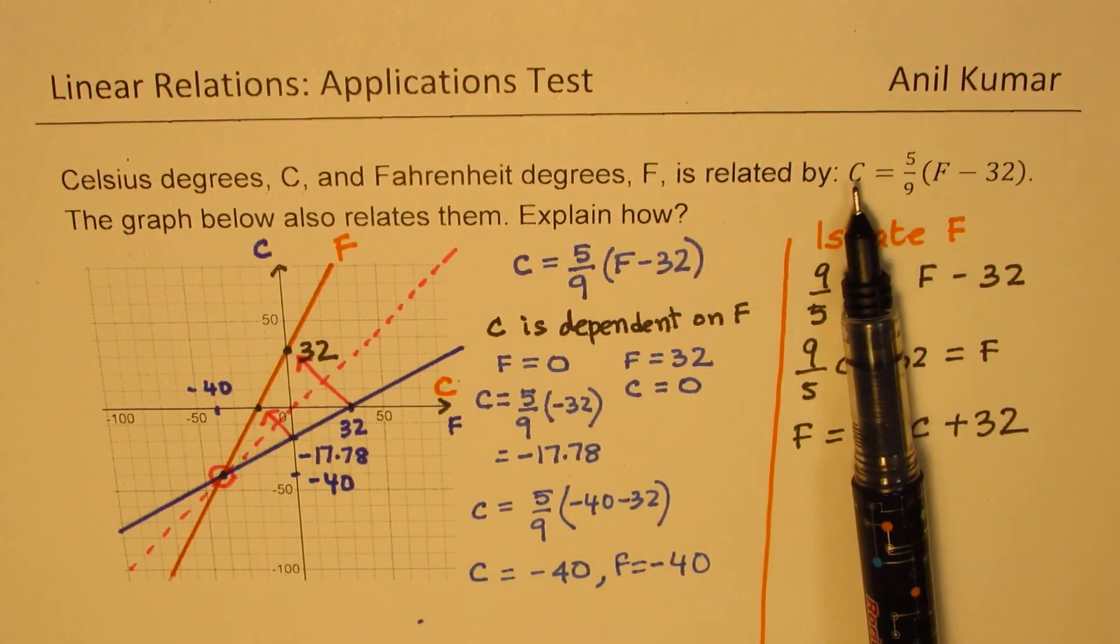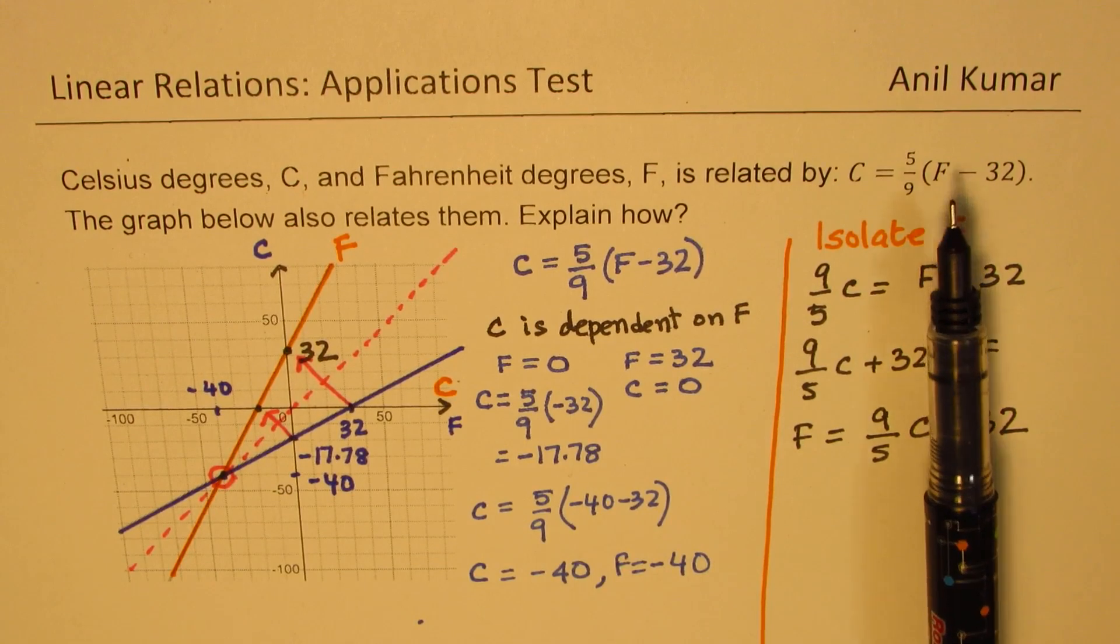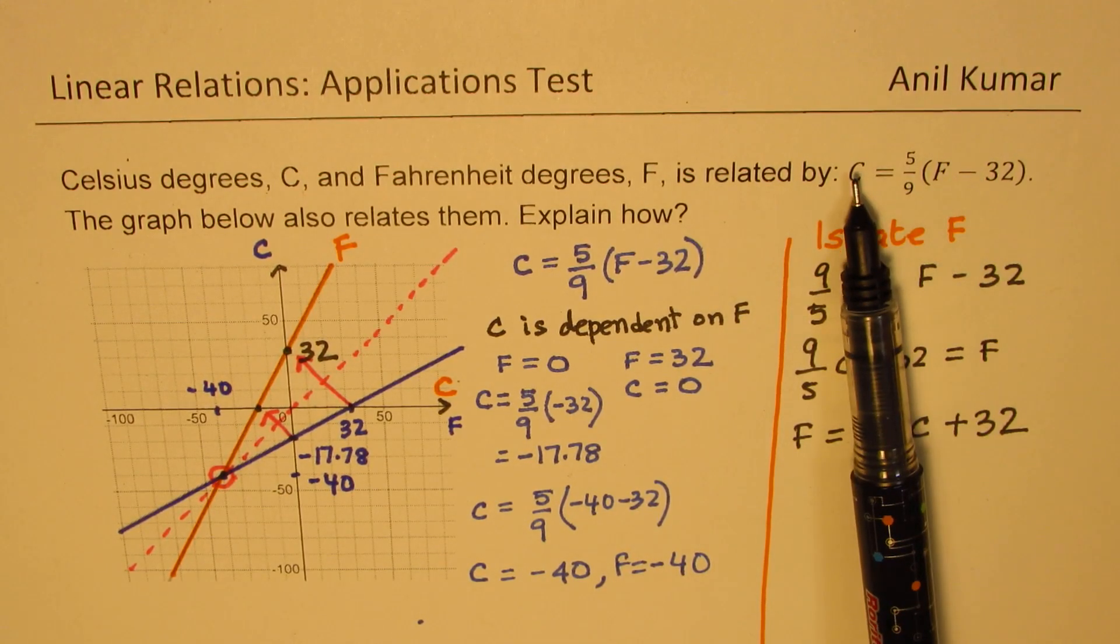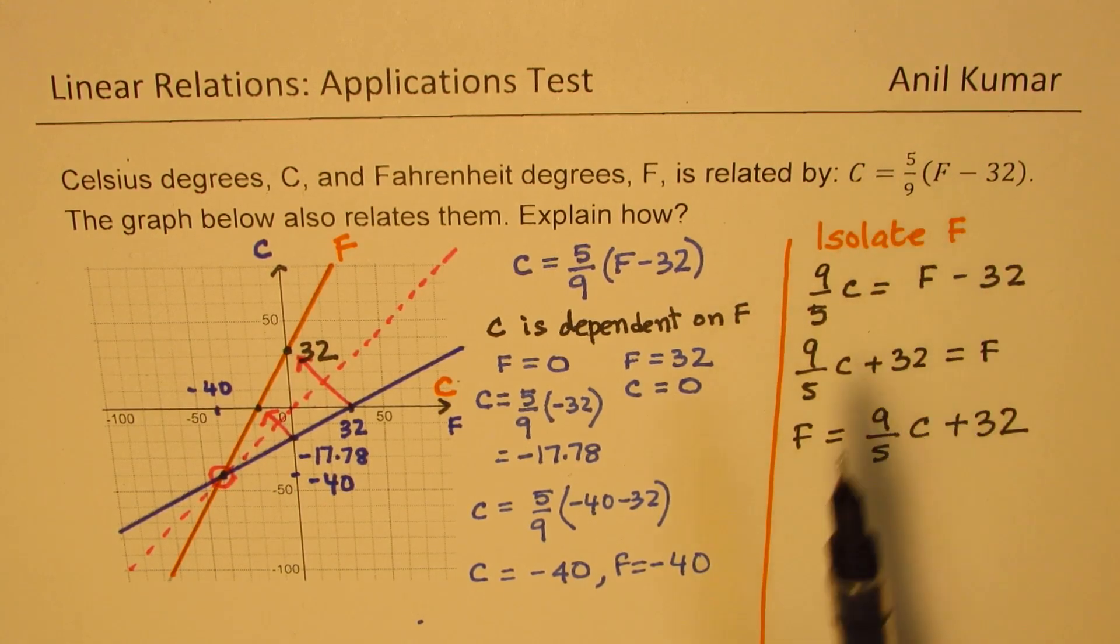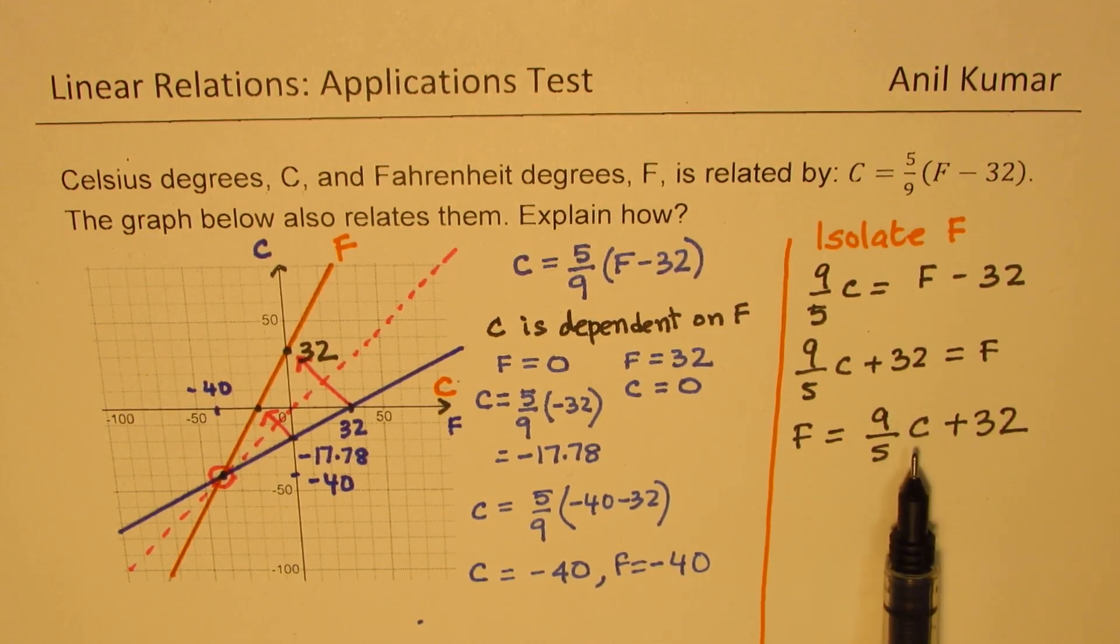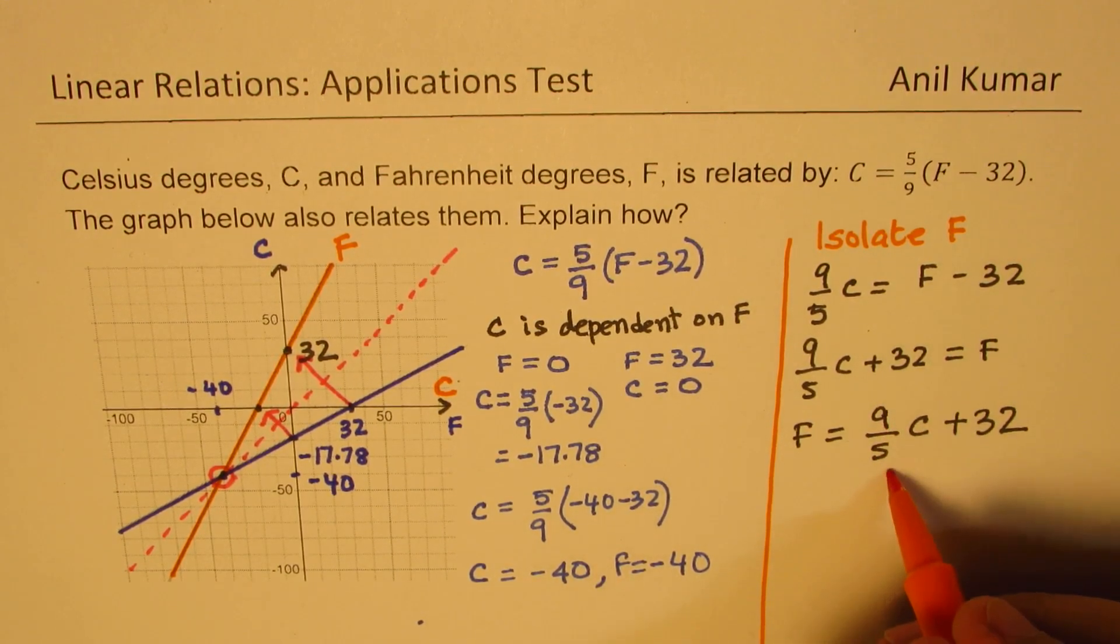If I work with C equals to 5 over 9, F minus 32, F is the independent variable. For degrees in Fahrenheit, we are interested in converting to Celsius. If we interchange these variables, then we get the equation as Fahrenheit is 9 over 5 C plus 32. That equation is also a linear relation. You have to place C, degrees Celsius, on the x-axis, and the values which you get will be reflected on the y-axis. The coordinates will be C and F in this case.